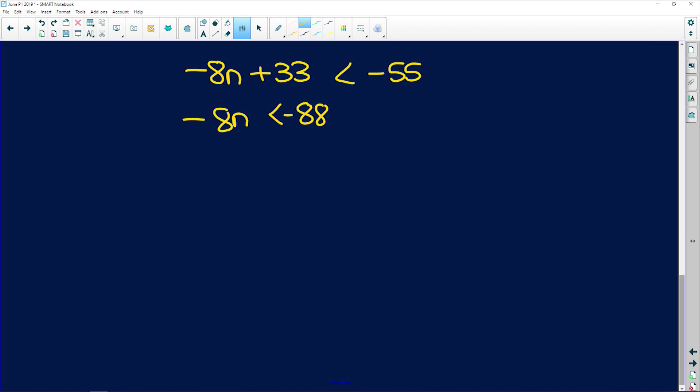Now I'm going to divide both sides by negative 8. But remember, if you divide by a negative, the inequality changes sides. So negative 8 divided by negative 8 is 1n, and negative 88 divided by negative 8 is 11.